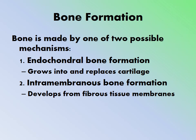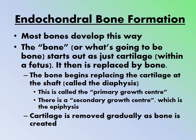There are two mechanisms of bone formation. The first is endochondral bone formation, in which bone grows into and replaces cartilage — 'chondro' being the root word for cartilage. The second is intramembranous bone formation, in which bone develops from fibrous tissue membrane.